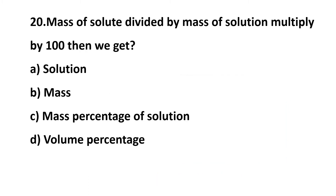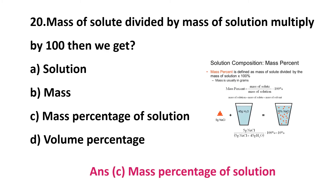Question 20: mass of solute divided by mass of solution multiplied by 100 gives — option A: solution, option B: mass, option C: mass percentage of solution, option D: volume percentage. Here mass is given and we multiply by 100, so we are getting a percentage. The correct answer is option C: mass percentage of solution.